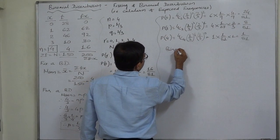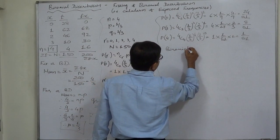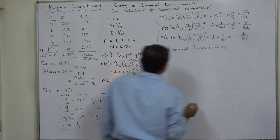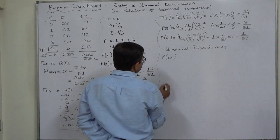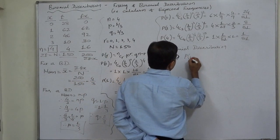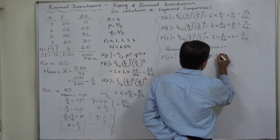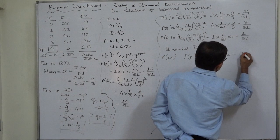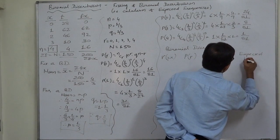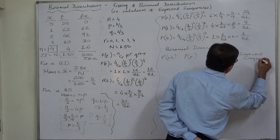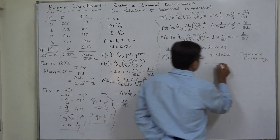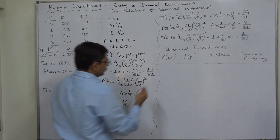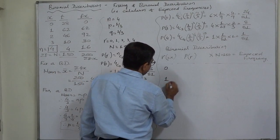Now we can fit the binomial distribution. R, that is equivalent to X in this case. P of R: if we multiply it by N, that is 150, it will be expected frequency. Possible values of R are 0, 1, 2, 3, and 4.